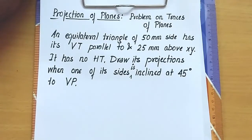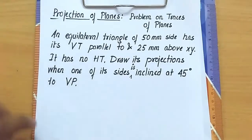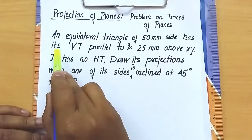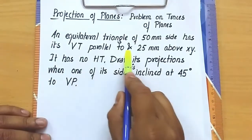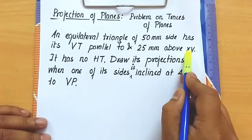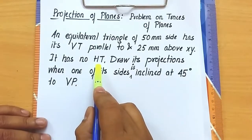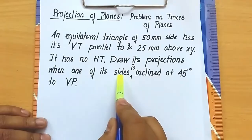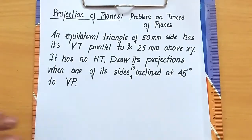Hi guys, this is Manas and today I'm going to continue with my discussion on projection of planes. More specifically, this is a problem based on traces of planes. An equilateral triangle of 50 mm side has its vertical trace parallel to and 25 mm above edge XY. It has no HT, that is horizontal trace. Draw its projections when one of its sides is inclined at 45 degrees to the VP.